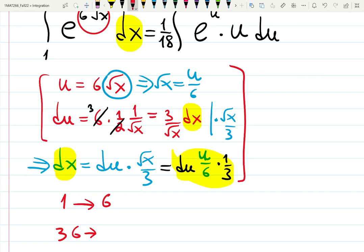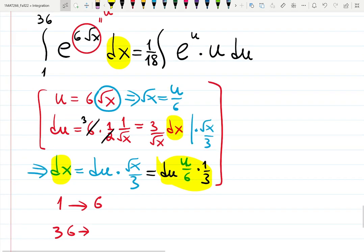When x is 36, u is 6 times square root of 36, which is 6 times 6, which is 36. Luckily, it's just a coincidence that one limit of integration did not change—36 stayed from 6 to 36. So we did not do integration by parts yet; we just used substitution.